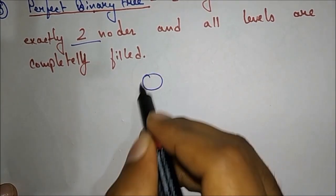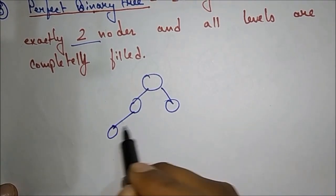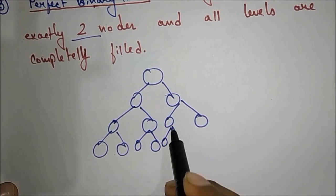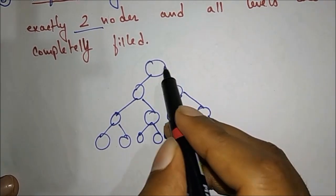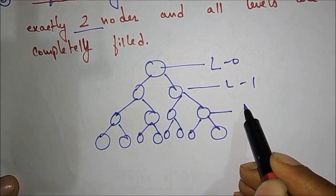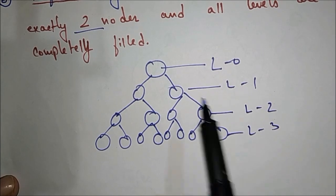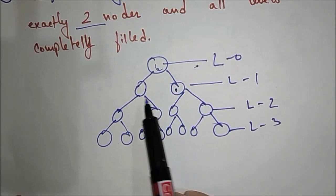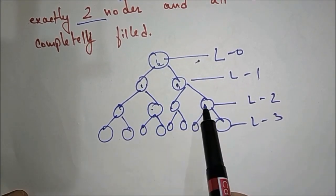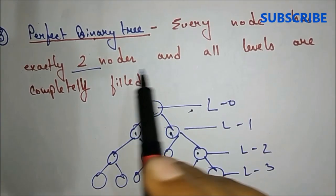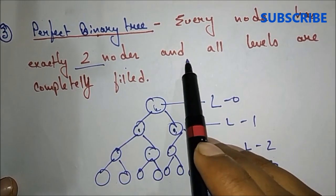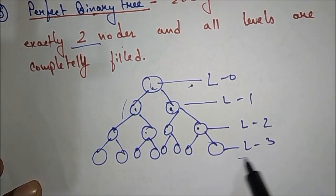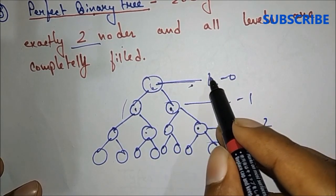This is one perfect binary tree. See — level 0, level 1, level 2, and level 3. For level 1, every node has two children, and for each subsequent level every node is also completely filled, so every node has exactly two children and all levels are completely filled.